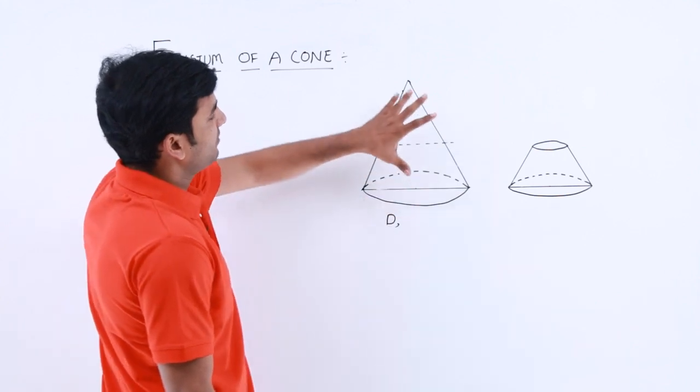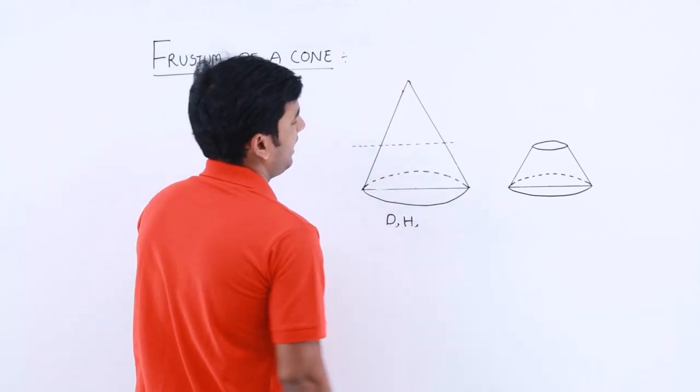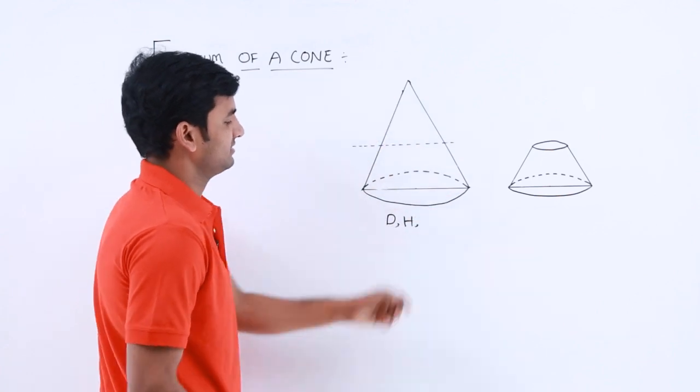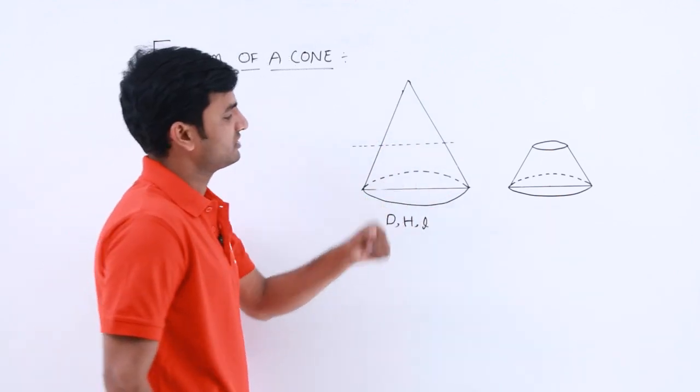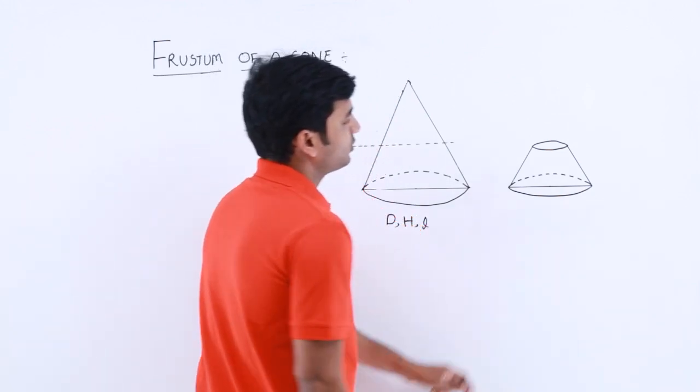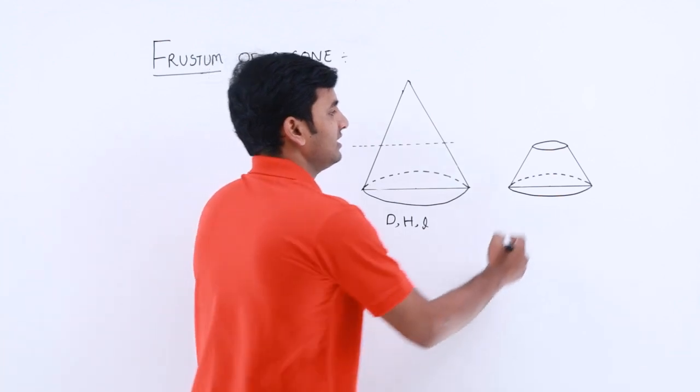And we have height of cone, that is capital H, and here we have a slant height, that is L. And coming to the frustum, here we have two base areas: base 1 and base 2. Let's consider upper portion diameter as D1.